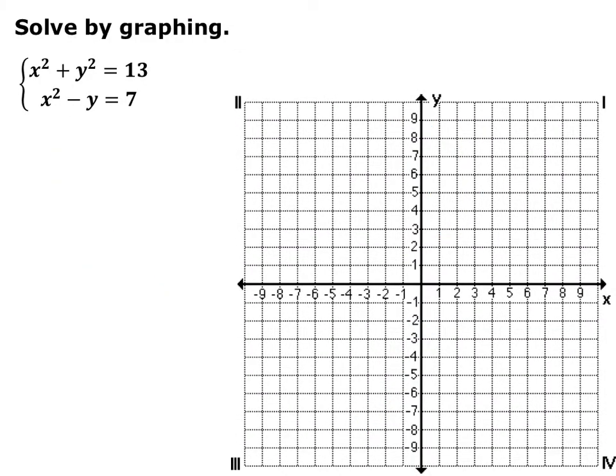Now we have the system x squared plus y squared equals 13, which is a circle with center at the origin and radius of the square root of 13. And we have the parabola x squared minus y equals 7, which is a parabola shifted down 7. Go ahead and pause the video and graph these two and find where they intersect — find the solutions.